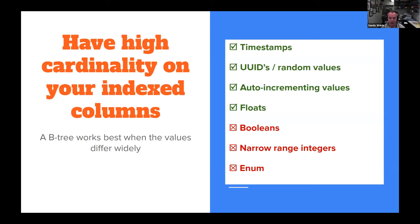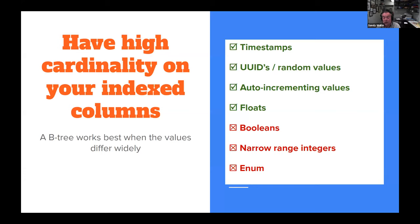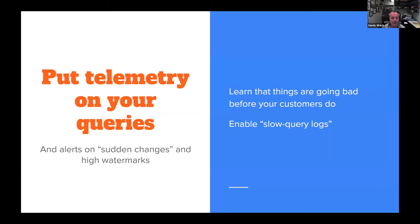Look for high cardinality on your index columns — things that have big variation in them. Booleans are terrible. Enums that only have six or seven different values, or a couple dozen values, are probably not that great. But things with high variance allow the B-tree to balance out better and it doesn't have to reshuffle as much. UUIDs, despite being a fat field, at least have high variation. Floats are actually pretty good too, depending on your range.